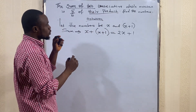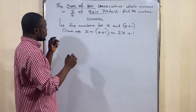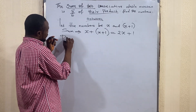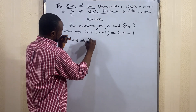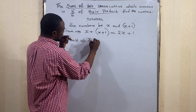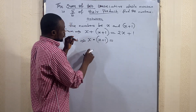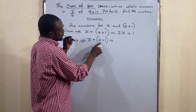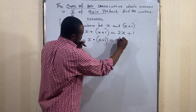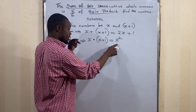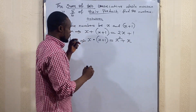The next part is their product. Product means multiplication. So product implies x multiplied by (x + 1). If we expand this bracket, we get x times x which is x², plus x times 1 which is x. So the product is x² + x.